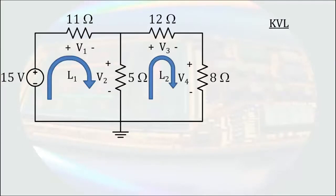So for L1, we go up by 15 volts, down by V1, and down by V2. So the equation we get is 15 volts, minus V1, minus V2, equals zero, since all the voltages around any closed loop must equal zero.